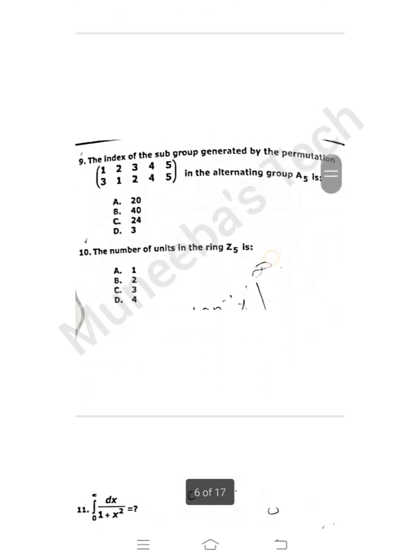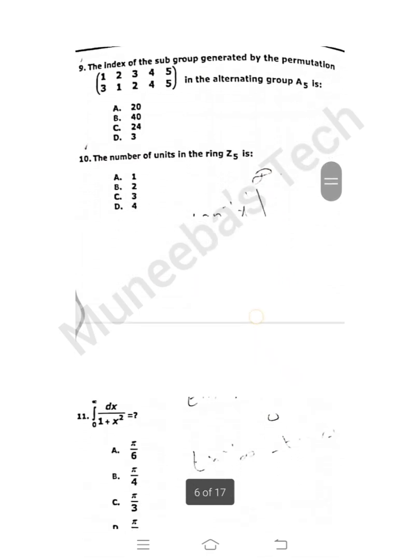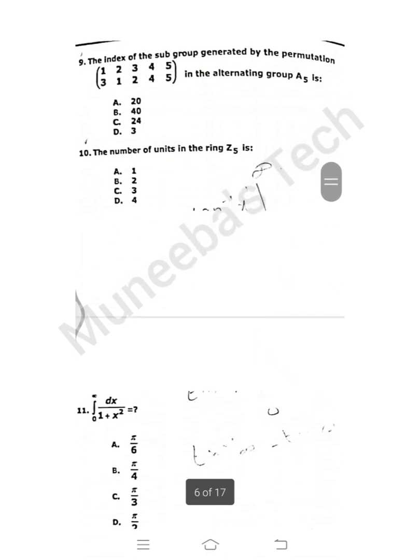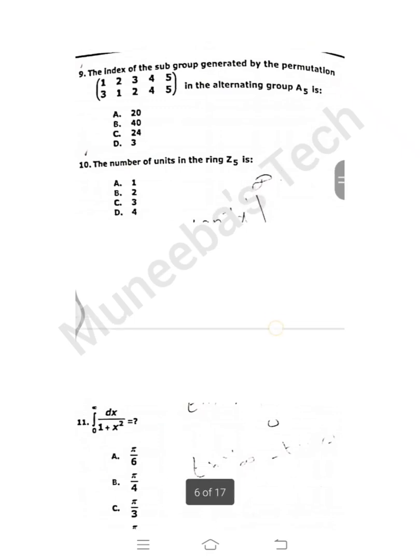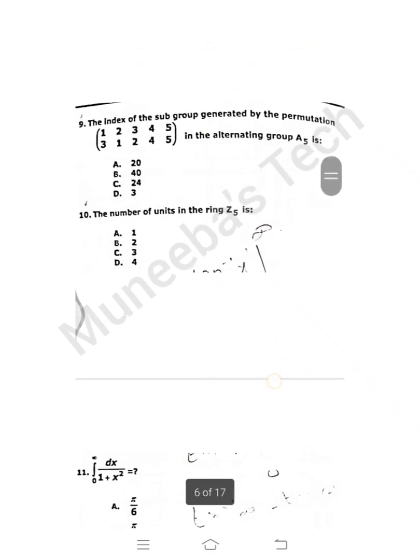Question number 9: The index of the subgroup generated by the permutation in the alternating group A5. Actually I didn't check this question and I'm not sure about the exact answer. So if any one of you may have any idea about the exactness of this answer, please share in the comment section.